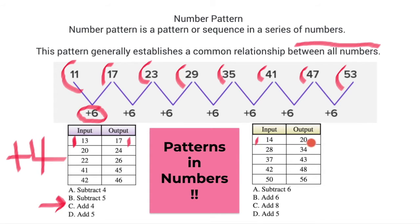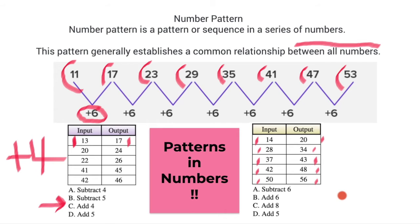In the second input/output box, we have 14 goes to 20, 28 ends up at 34, 37 makes 43, 42 then gives 48, and 50 then gives 56. You can think of this box like a bank account — you input 14 dollars, at the end of the month you have 20. The relationship here is plus 6.